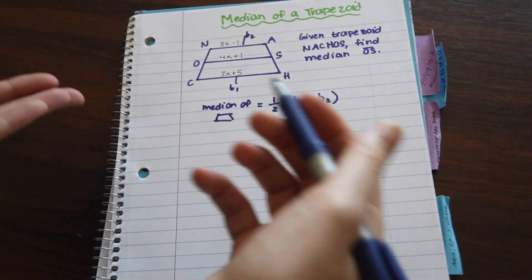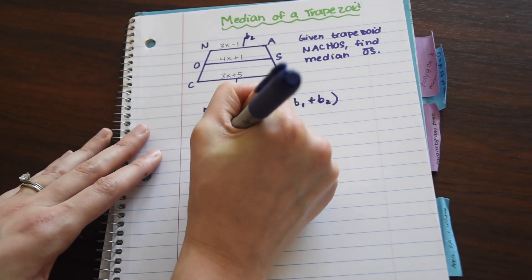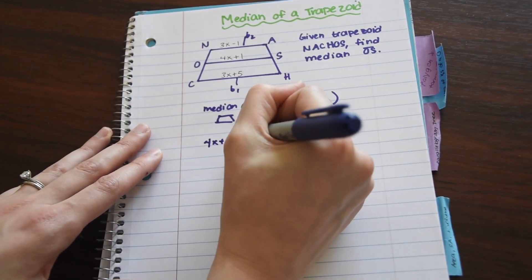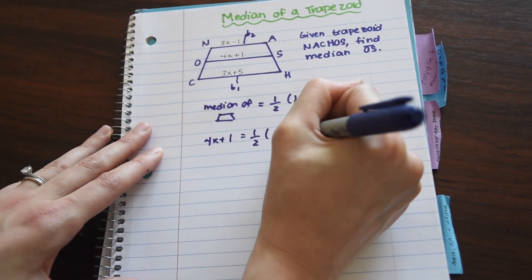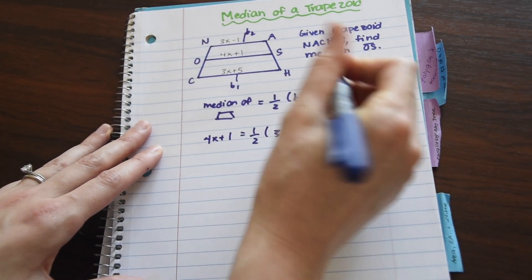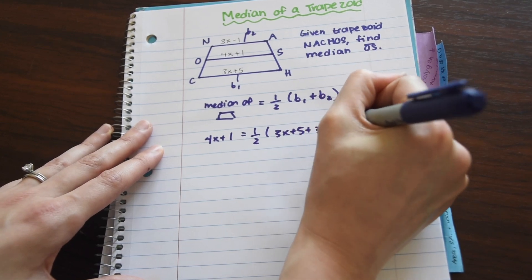So now we can fill in our formula, so we know that the median is equal to 4X plus 1, and we know that base 1 is 3X plus 5, plus base 2, 3X minus 1.